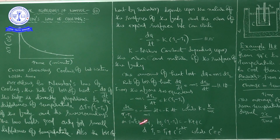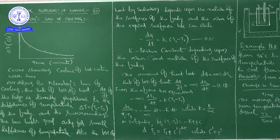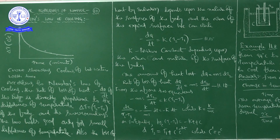Rearranging: dT2/(T2 − T1) = −(k/ms)·dt. Since mass m, specific heat capacity s, and k are all constants, we define a new constant K = k/ms. Integrating both sides, we get: ln(T2 − T1) = −Kt + C.